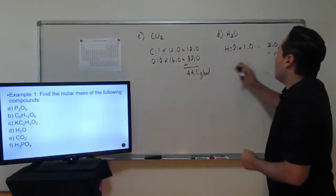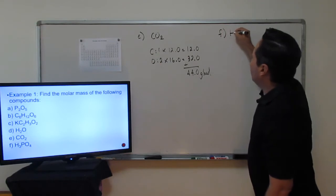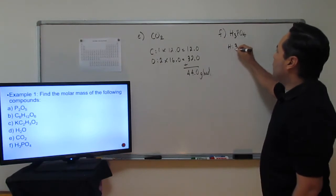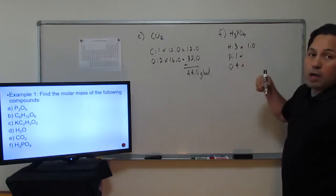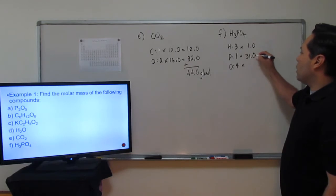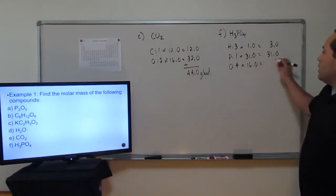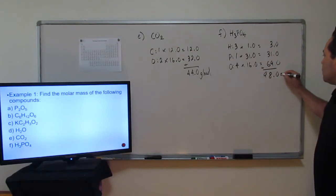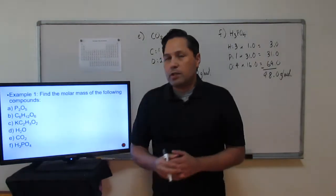Finally, letter F: H₃PO₄ — hydrogen phosphate. There are three hydrogens, one phosphorus, and four oxygens. Multiply times mass from the periodic table: hydrogen is 1, phosphorus is 31, oxygen is 16. Products are 3.0, 31.0, and 64.0, for a grand total of 98 grams per mole. That is the molar mass of hydrogen phosphate. That takes care of example one.